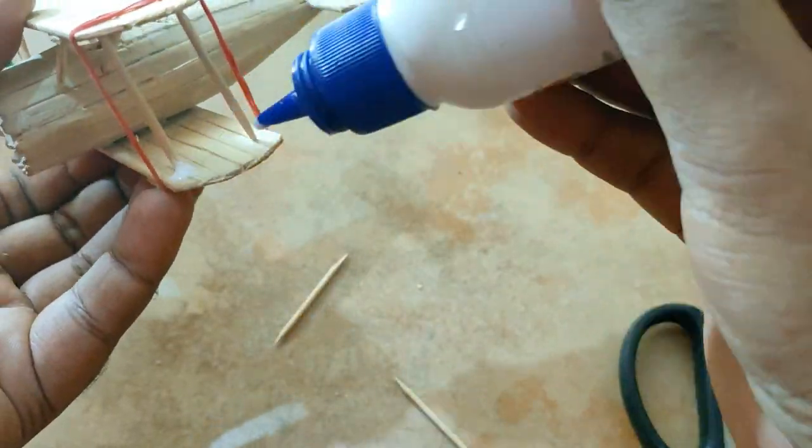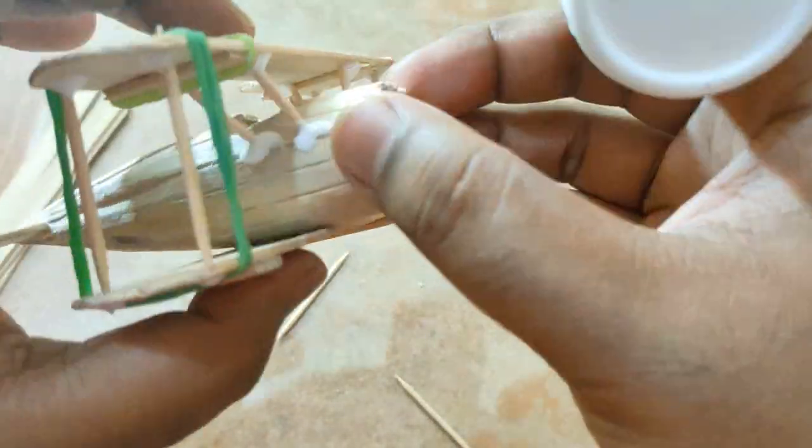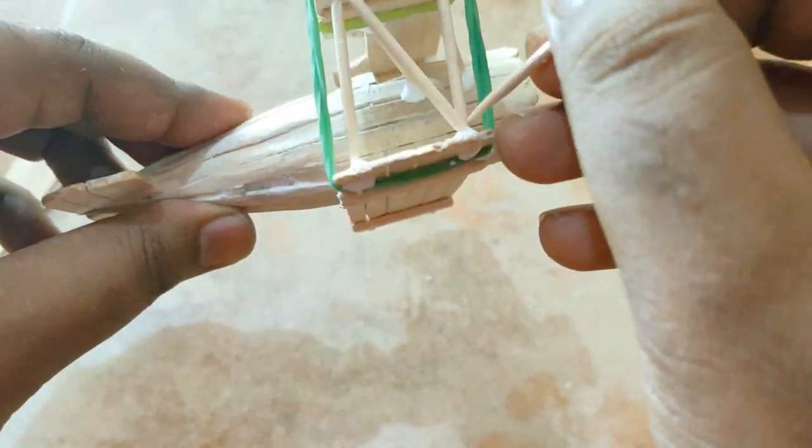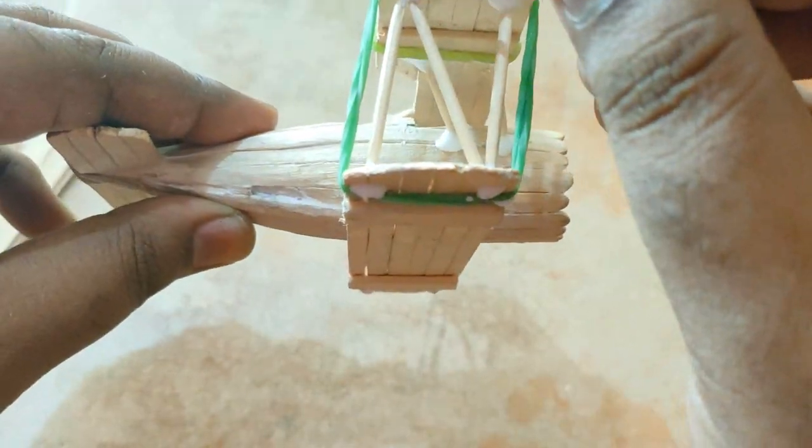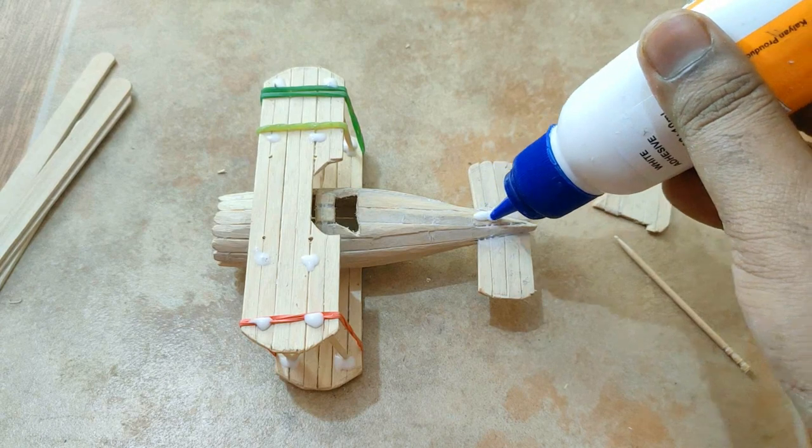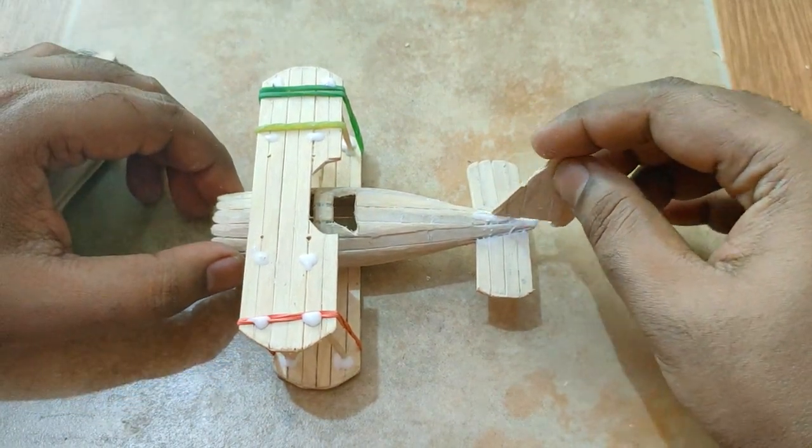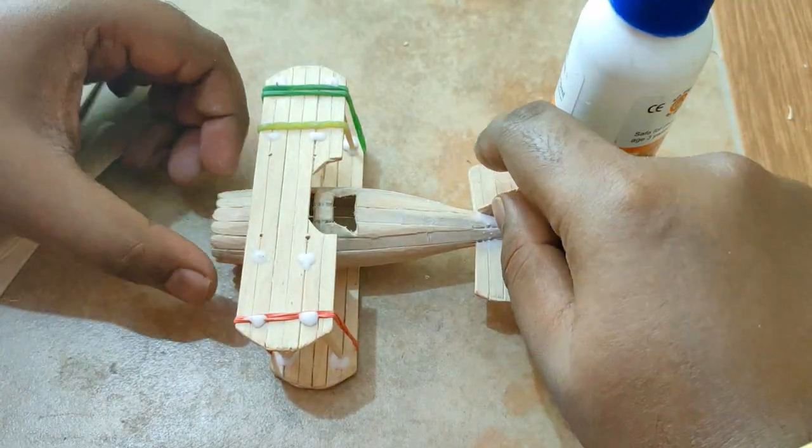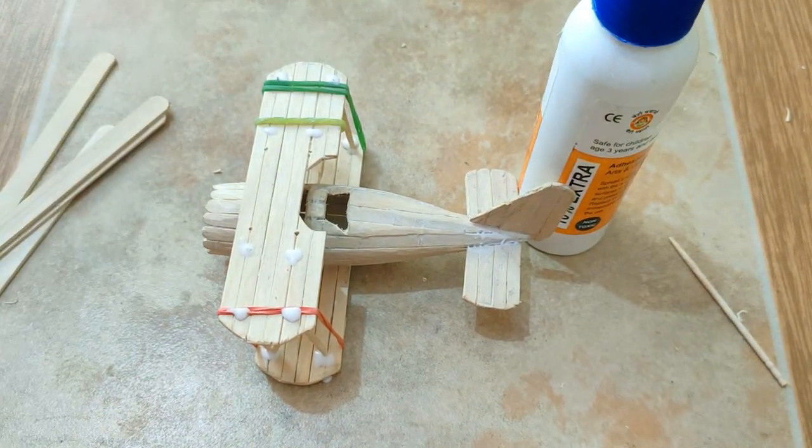Now applying glue on all those joining parts and holes. I am also sticking the tail wings here and giving the support to keep it straight. Leave it for a while till this completely dries.